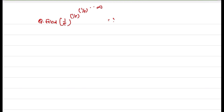Can we write this particular equation as 1 by E to the power of x is equal to x? Let us try to simplify the above equation. Let 1 by E to the power of x is equal to x. Does it denote 1 by E to the power of 1 by E to the power of 1 by E up to infinity?